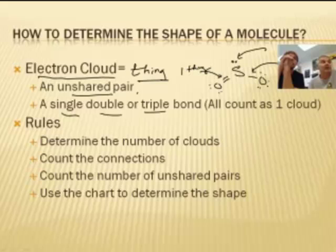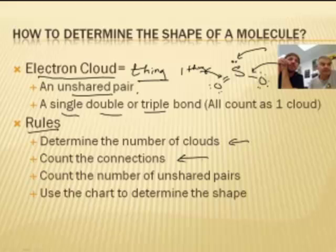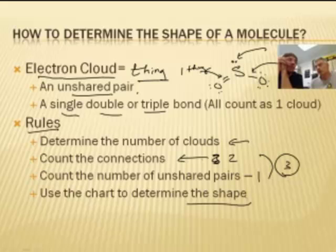So, hey, here's the rules. You determine the number of clouds. Or things. Right. You count the connections. One, two, three. In this case. In this case, it would be three. You count the number of unshared pairs. Okay. Well, actually, no. This is two. Oh, yeah. Sorry. Number of unshared pairs, one. Yes. They add up to three things. Right. And then you use the chart to determine shape. We've got a chart. And we'll talk about the chart in a minute. Yeah.